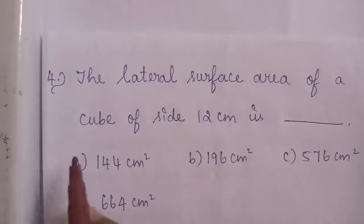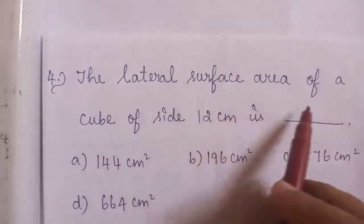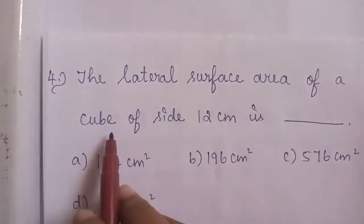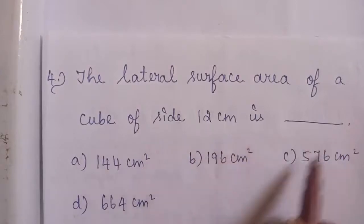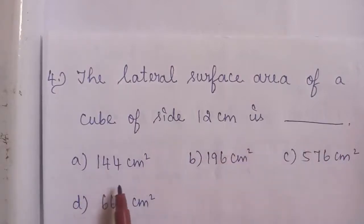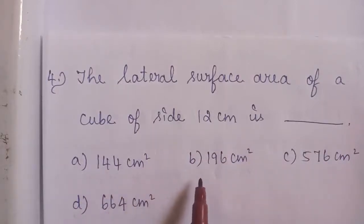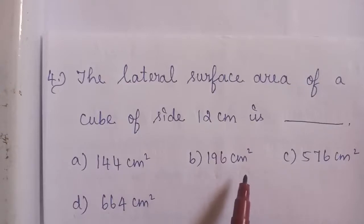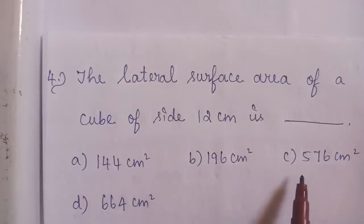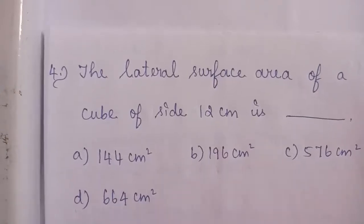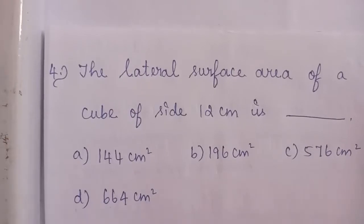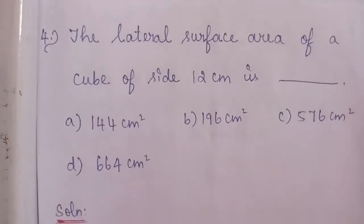Question No. 4: The lateral surface area of a cube of side 12 cm is dash. Option A: 144 cm square. Option B: 196 cm square. Option C: 576 cm square. Option D: 664 cm square.